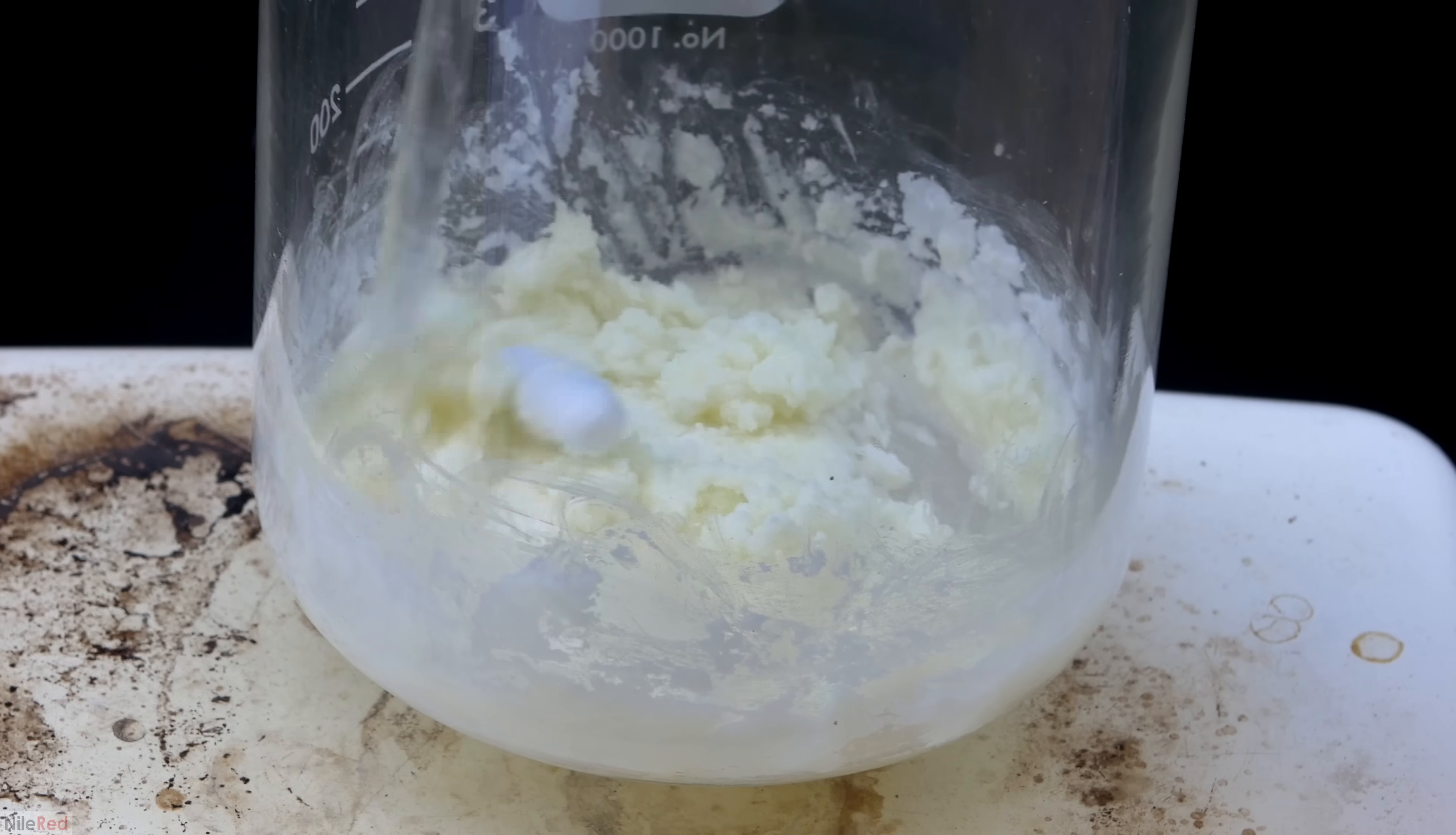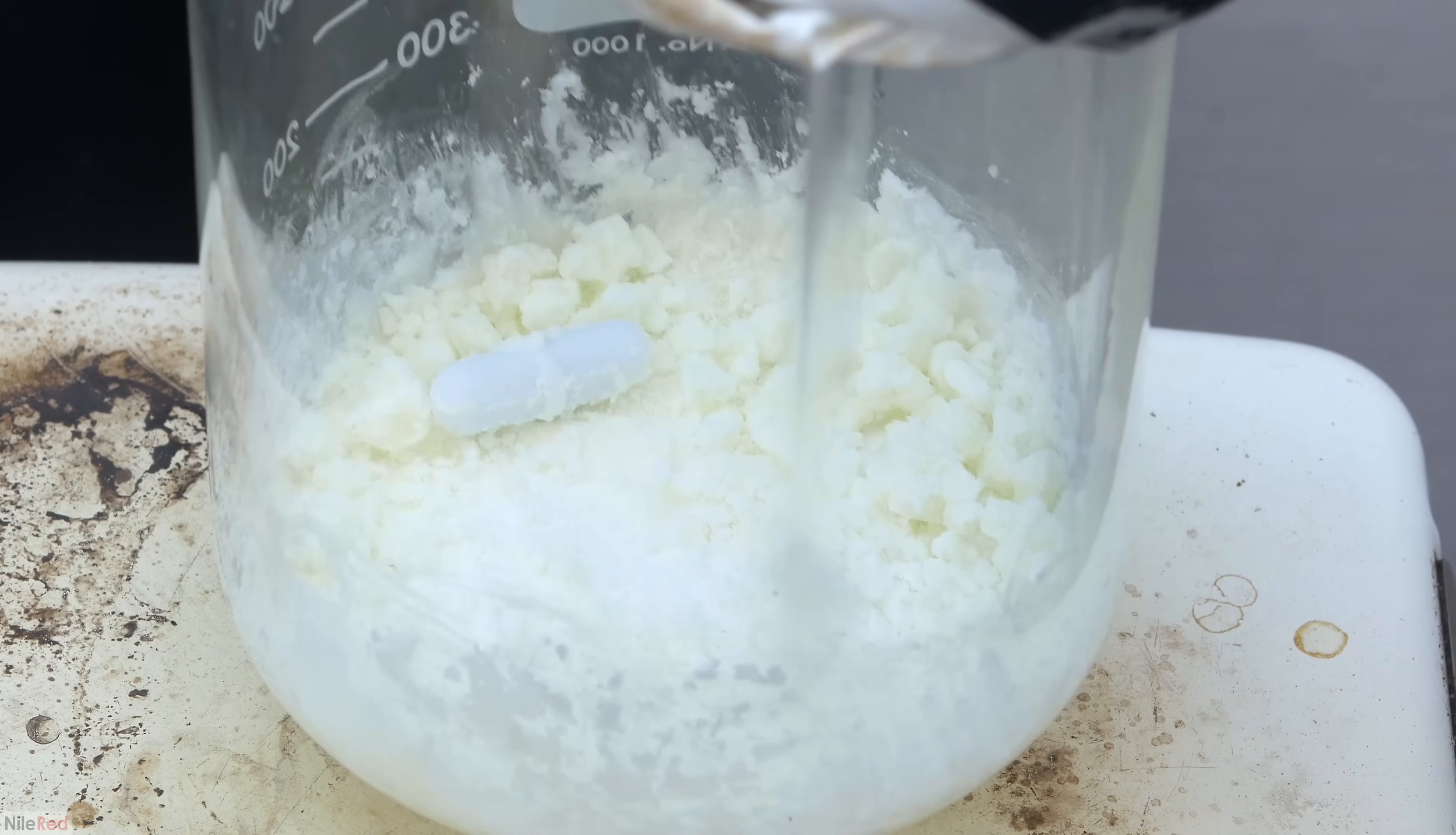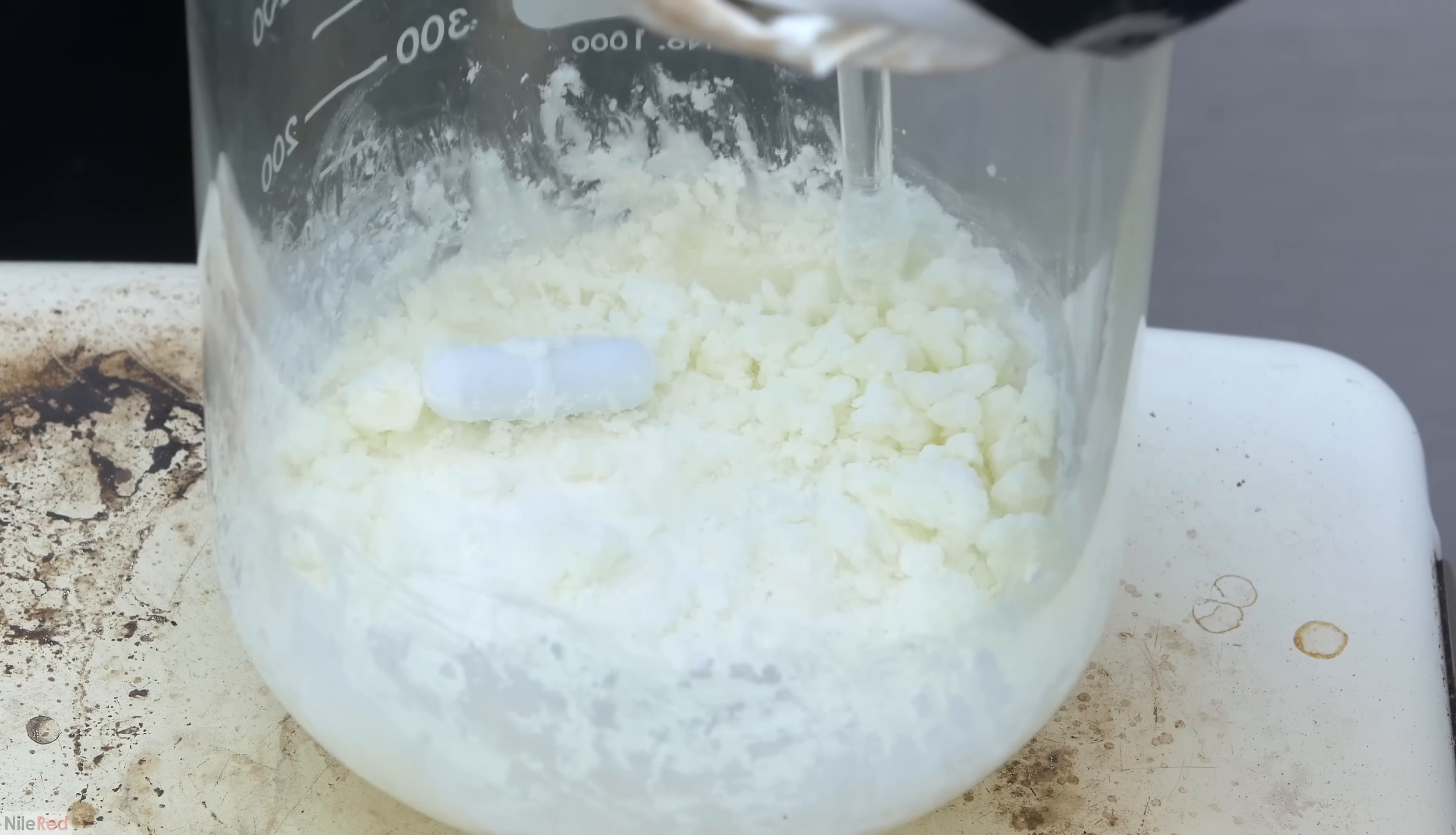As we continue to dry things, we actually got something that looked a little bit like wet scrambled eggs. When it started to look like we had a relatively dry powder, the heat was turned up to decompose the mercury(II) nitrate into mercury(II) oxide.